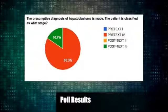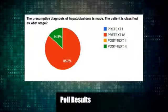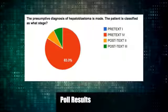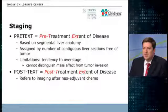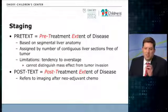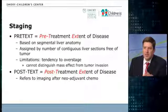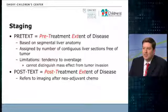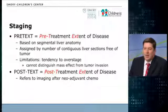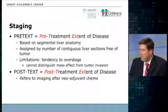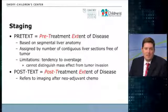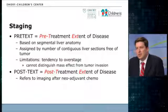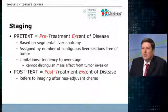About 80% are going with PRETEXT IV. PRETEXT staging stands for pre-treatment extent of disease. This staging system is based on segmental liver anatomy, and importantly this is staging prior to chemotherapy. PRETEXT staging has a tendency to overstage because it is based purely on imaging, and many of these tumors are so bulky it's hard to assess whether there's true vascular invasion or just a large mass effect on the portal vein, hepatic veins, and structures of that nature.